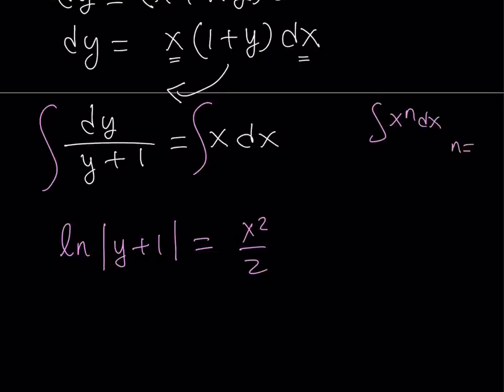So, if you have x to the power n dx, of course, where n does not equal negative 1, we have x to the power n plus 1 divided by n plus 1 plus c. We just increase the exponent and divide by that. And it's the opposite of differentiation, because in differentiation, we lower the exponent.